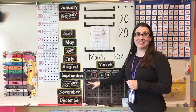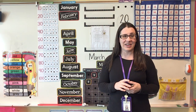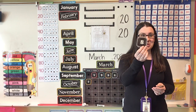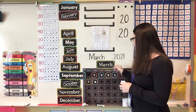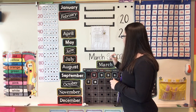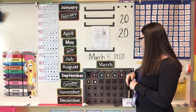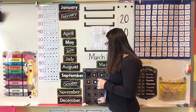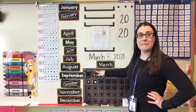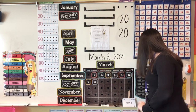Yesterday was March the 7th, 2021. What is one more than seven? Eight. So today is going to be March the 8th, 2021. Go ahead and help me read the date. March 8th, 2021. And if we look right here, you can see that I put the eight underneath the word Monday. That tells me that today is Monday.